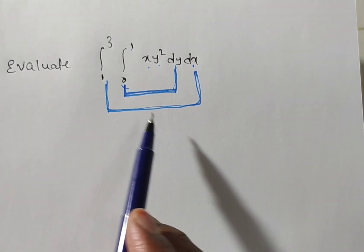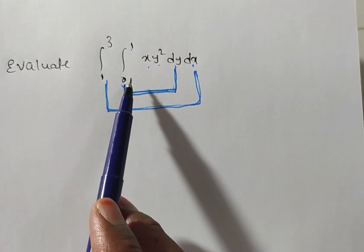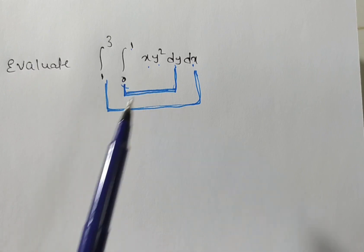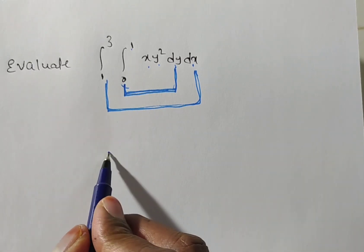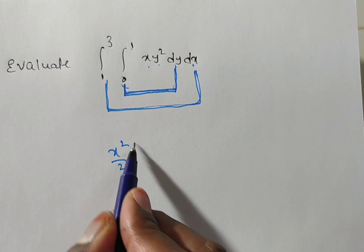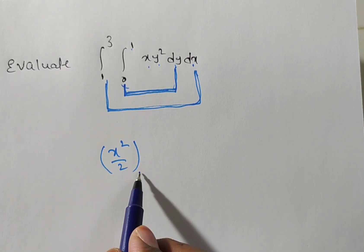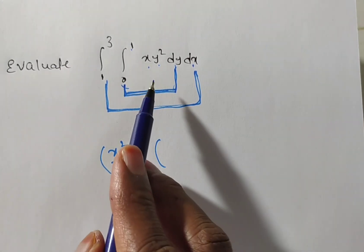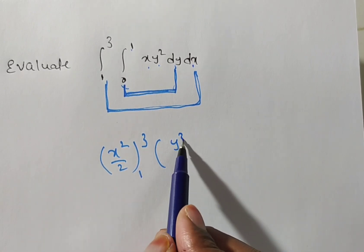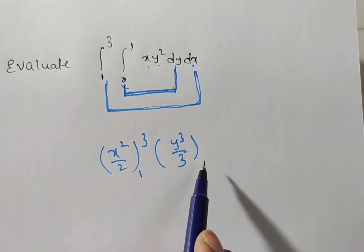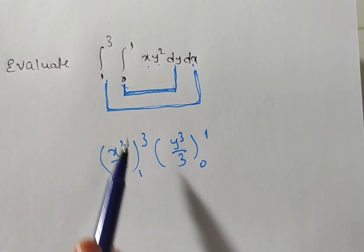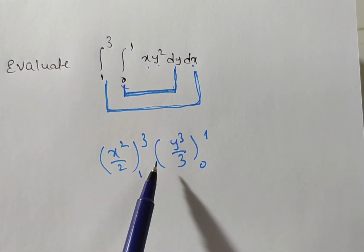Since both limits of x and y are independent, we can integrate in any order. In Method 1, I am doing direct integration: x integrates to x squared over 2 with limits 1 to 3, and y squared integrates to y cubed over 3 with limits 0 to 1. I will show you both methods.